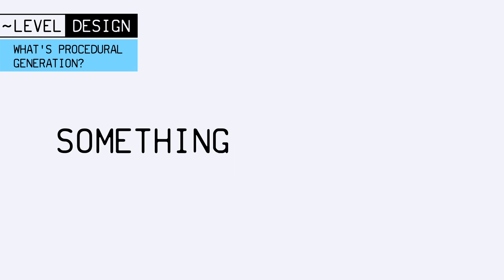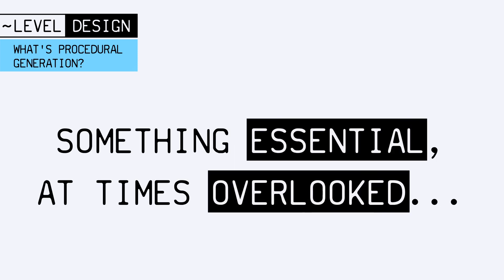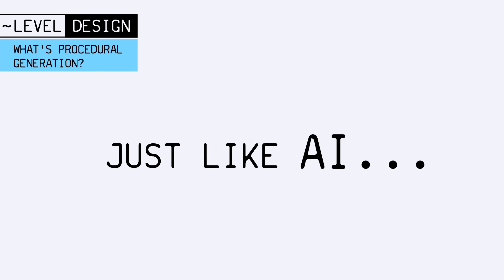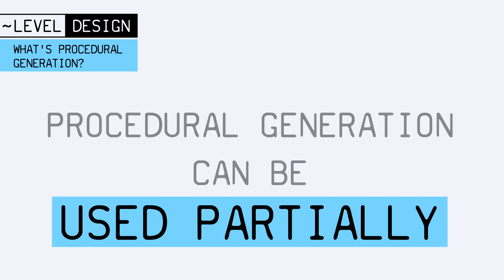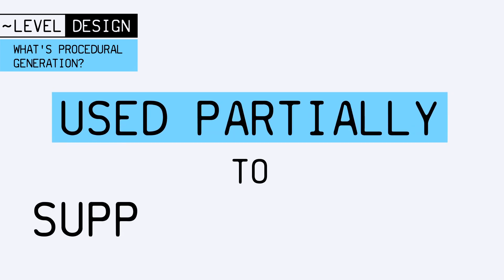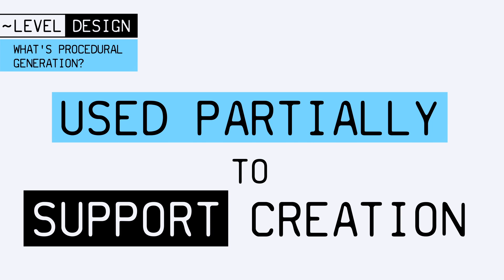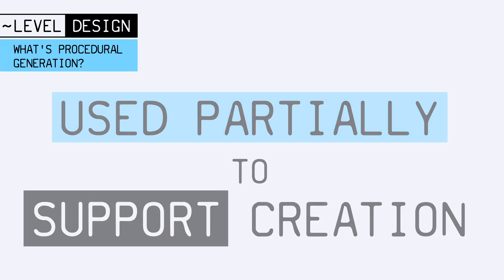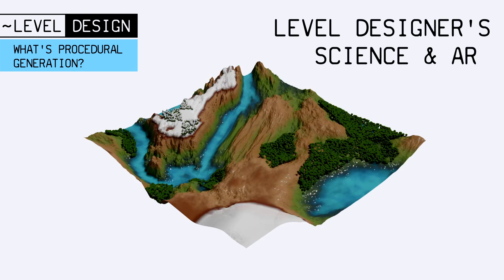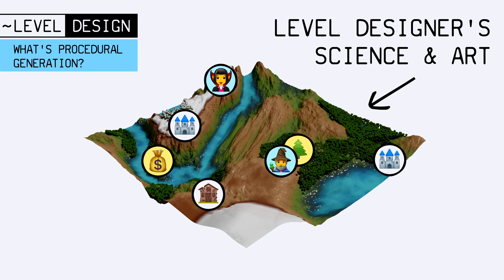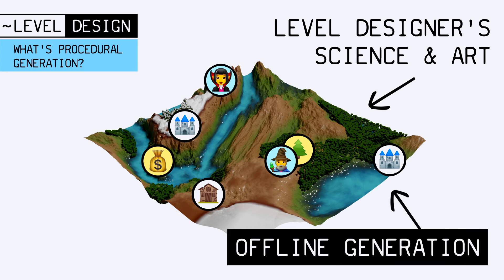Another essential point about procedural generation that is sometimes overlooked is that, just like AI — its very in-vogue cousin — it doesn't have to be used all on its own from start to finish. It can actually be used to support a step of the game creation pipeline, and not just try to replace it completely. For example, it could generate the terrain procedurally, and then have level designers use all their science and artistry to fill in the landmarks, points of interest, key narrative events, and more. This is often called offline generation, because you run your generator beforehand and not while the game is running.